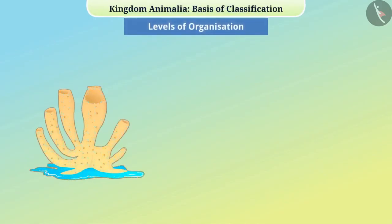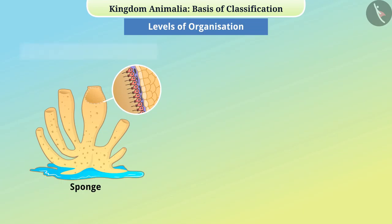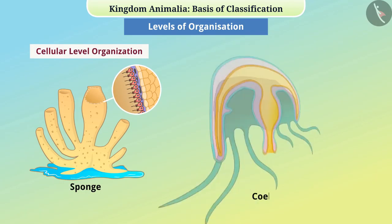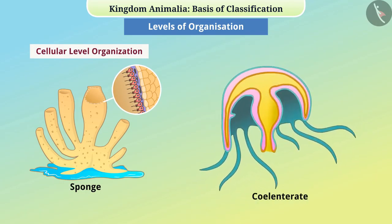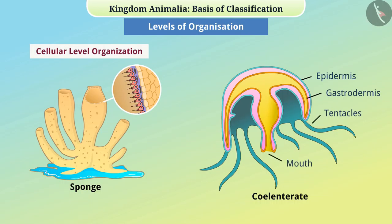Levels of Organization: Cells in some animals, like sponges, are in scattered clusters, which we call cellular level organization. In some animals, such as coelentrates, cells perform their function by forming tissue — this is called tissue level organization.